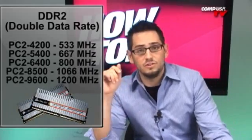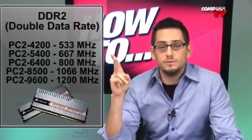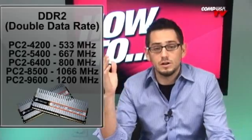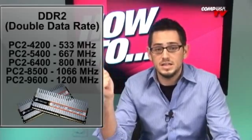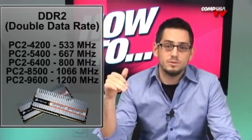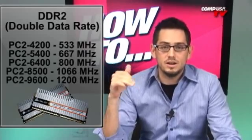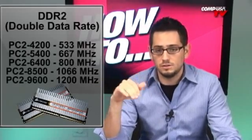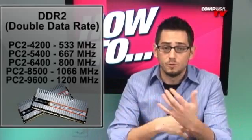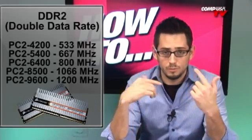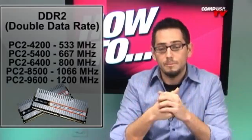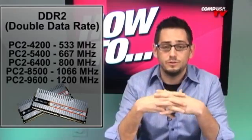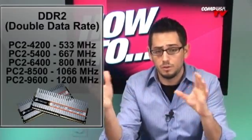DDR2 starts at 4200. There's 5400, 6400, and then the overclocked ones — 8500 and 9600. The MHz that correspond with those are 533, 667, 800, 1066, and the fastest is 1200. Most regular motherboards cut off at 800 for DDR2. The higher-end motherboards — the ones for gaming and workstations — support 1066 and 1200MHz RAM, which you do want to use if your motherboard supports it.